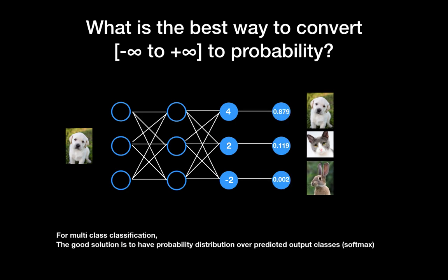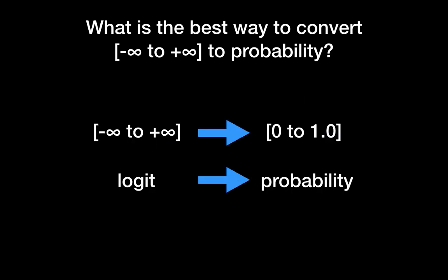The good solution is to have a probability distribution over all predicted output classes — we call this softmax. If you sum up all the output values in this example, they will be exactly one, so we can say it is the probability distribution of predicted output classes, and we can treat every value as the probability for each class.